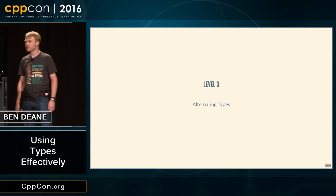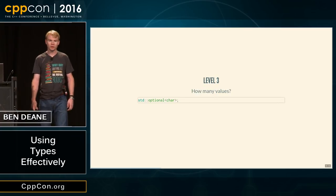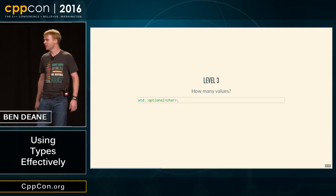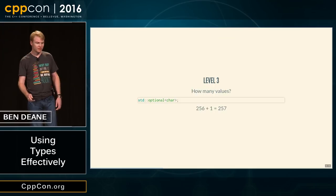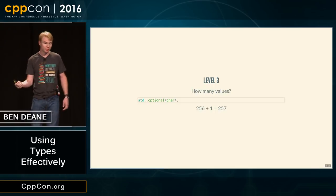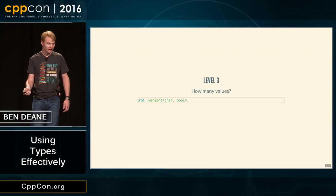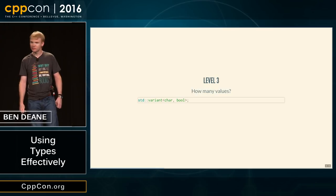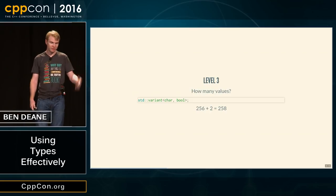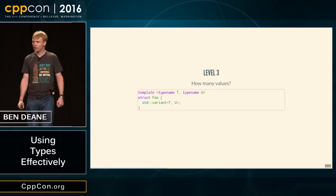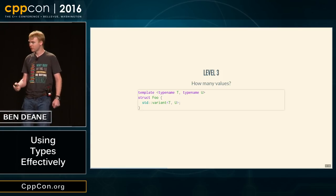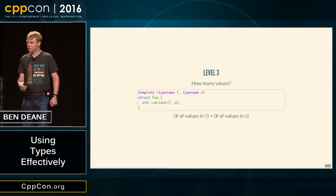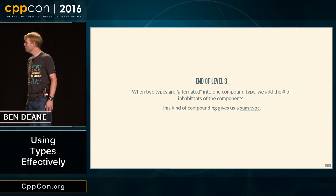Level three is something new in C++. How many values of an optional char? 257 — because optional gives you the one extra sentinel value outside your type, and we add them together. How many values in a variant of char and bool? 258 — char is 256, plus bool is 2. For a generic foo of T and U, it's the sum of the cardinalities of T and U. This is called a sum type in type theory, and variants and optionals are now in C++.